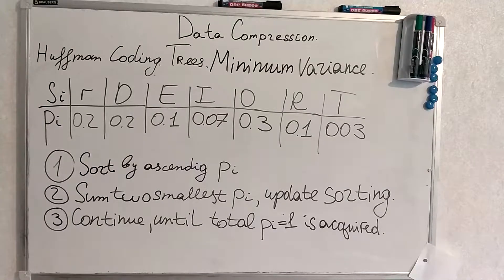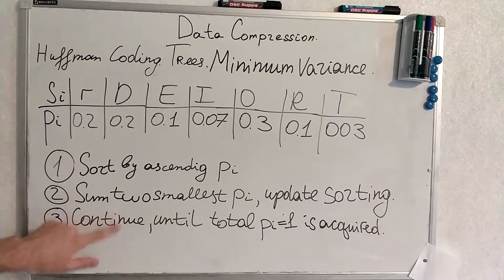Now the last algorithm with regards to Huffman coding. It's minimum variance Huffman coding. Once again, as always, outline of the algorithm.